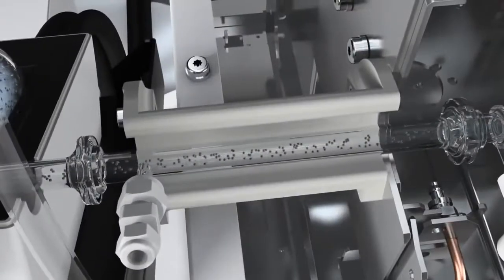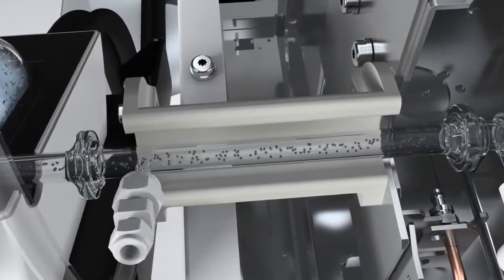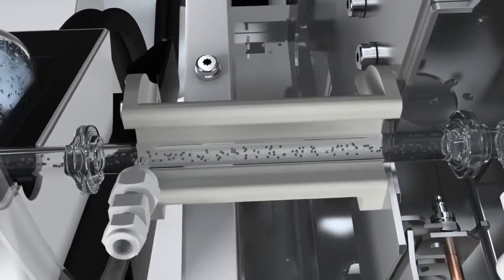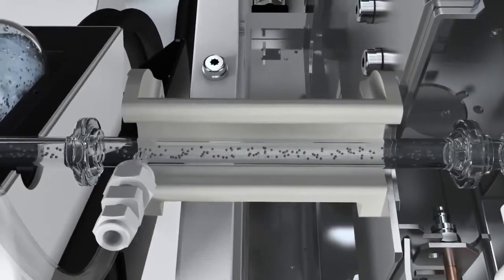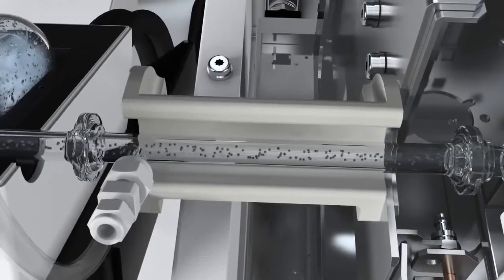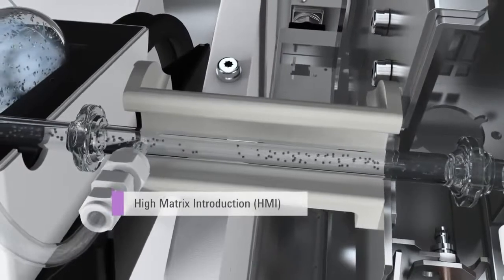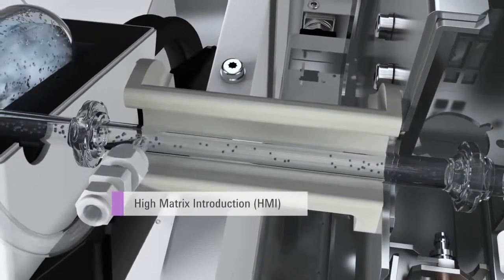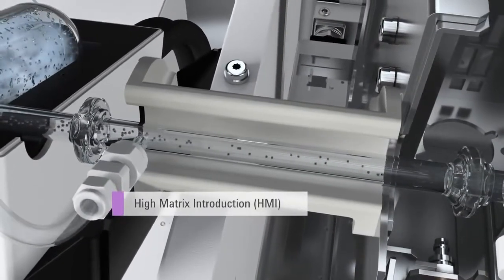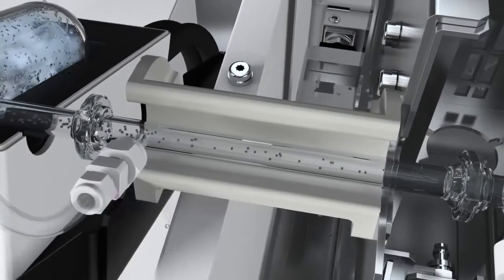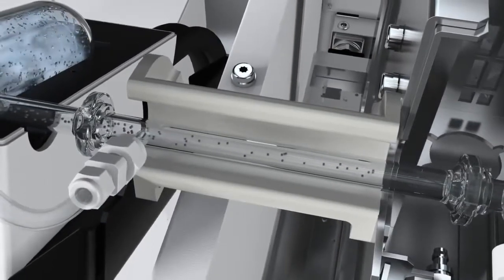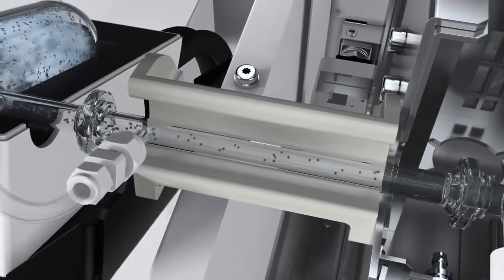The 7700 delivers the best matrix tolerance, lowest interferences and highest ionization of any commercial ICP-MS. Now, Agilent's innovative HMI, or High Matrix Introduction Technology, further extends the matrix tolerance of the 7700X and allows percent-level matrices such as undiluted seawater to be measured routinely.